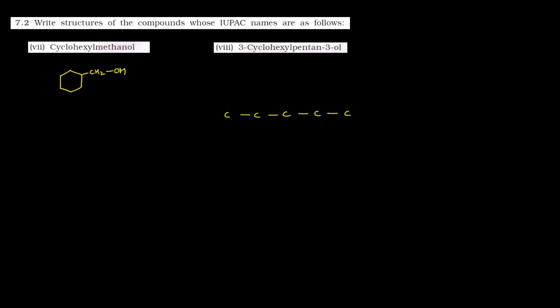Next part kya hai — 3-cyclohexyl pentane-3-ol. Sabse pehle humein dekhna hai parent chain, that is pentane. Toh banayenge 5 carbon atoms ki chain: 1, 2, 3, 4, and 5. 3-cyclohexyl — yeh hai third carbon atom, aur is par hai 6 carbon atoms ki ring. Toh yeh aapne bana di ring — this is cyclohexyl. Aur pentane-3-ol matlab third position par hi hai OH group. Ab main structure ban gaya. Valency complete kar do: yeh jayega CH2 aur CH3. Clear hai.